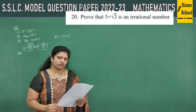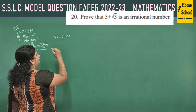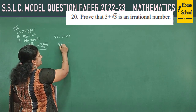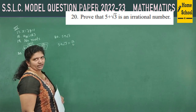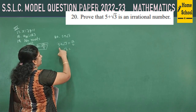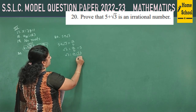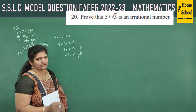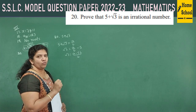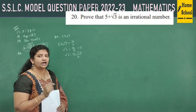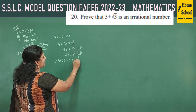Question 20: prove that 5 + √3 is an irrational number. Assume it is rational, so equate it to p/q (or a/b). Then √3 = a/b − 5 = (a − 5b)/b. Since a − 5b and b are integers, (a−5b)/b is rational. But √3 is irrational — a rational number cannot equal an irrational number. Our assumption is wrong. Therefore, 5 + √3 is irrational.